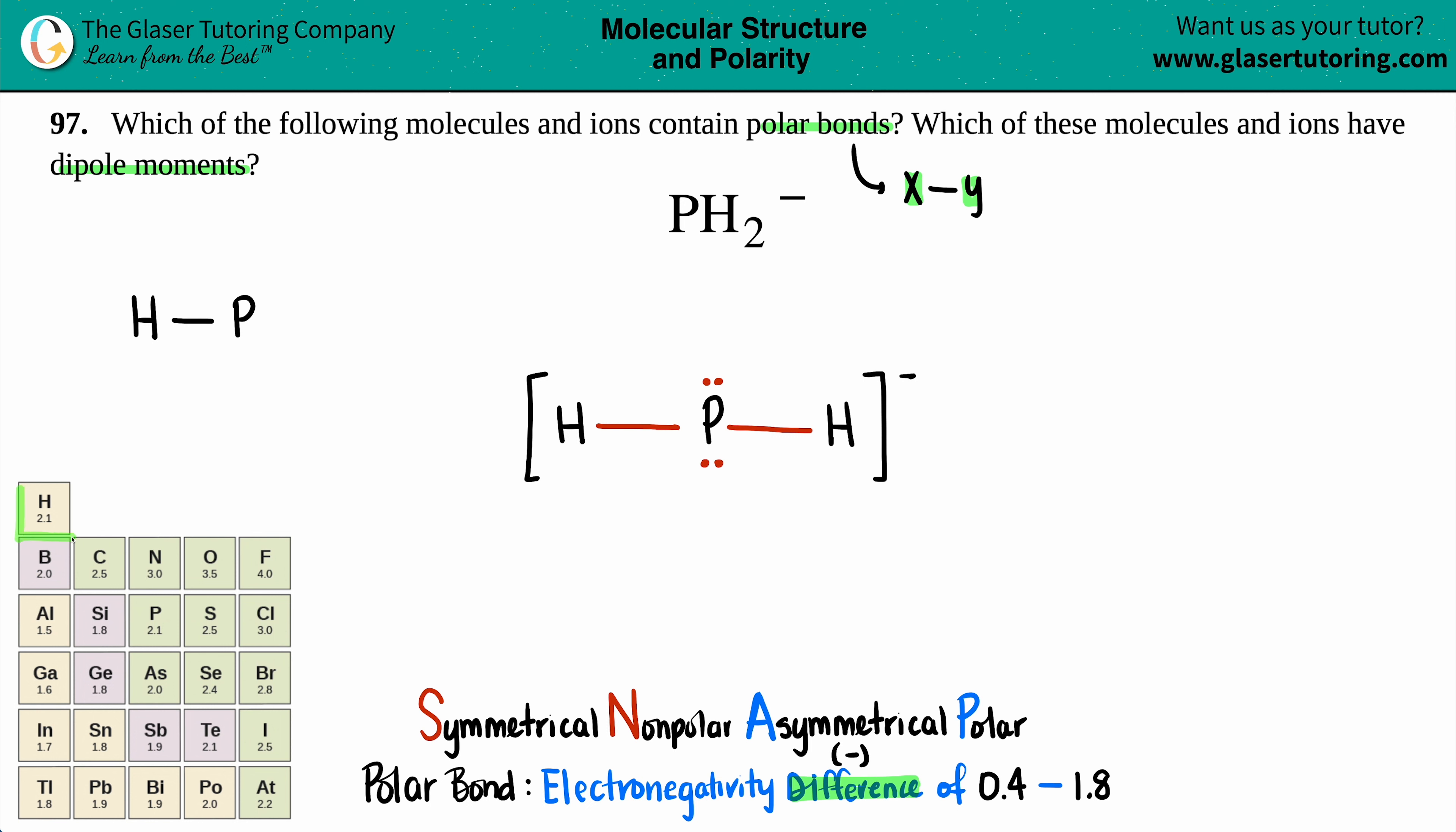Now on my electronegativity chart, I do have hydrogen coming in as a 2.1 electronegativity and the phosphorus is also coming at 2.1. So when you subtract these two numbers, 2.1 minus 2.1, you get zero. Does that make the cut? No, we are not here. We are lower than 0.4. So this is not polar bond.